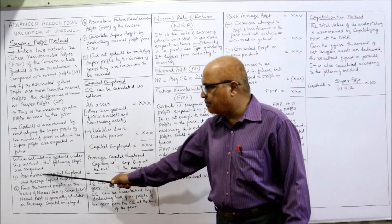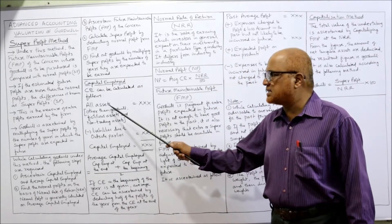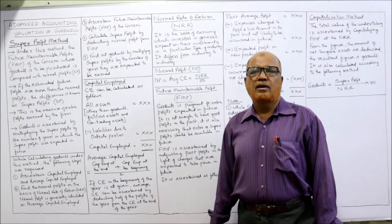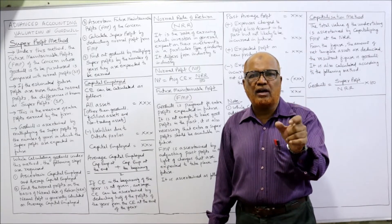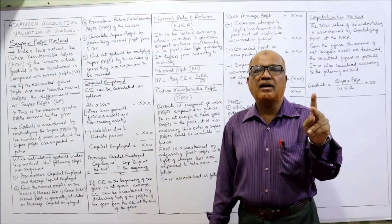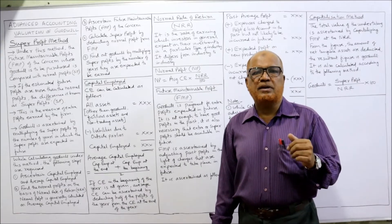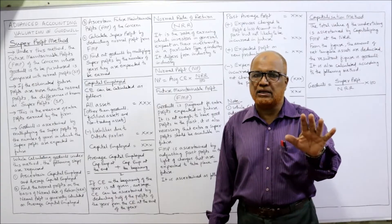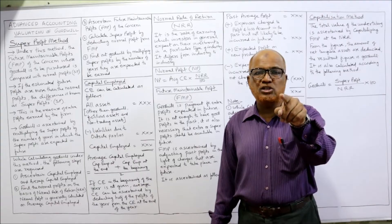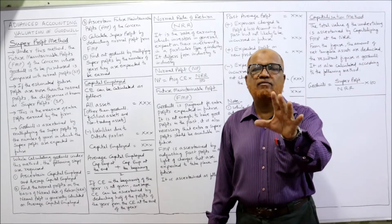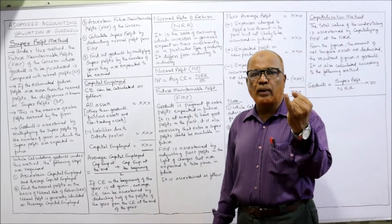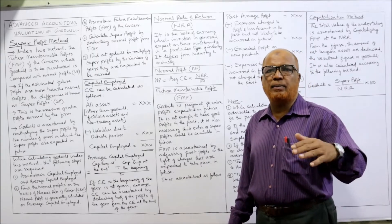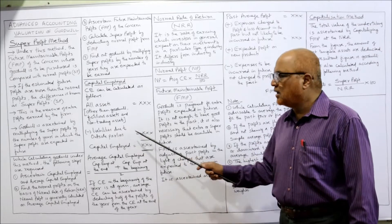Capital employed is calculated as follows. In assets, we take all assets other than goodwill, fictitious assets, and non-trading assets. Don't include goodwill. Don't include fictitious assets — fictitious assets mean imaginary assets like preliminary expenses, discount on issue of shares, discount on issue of debentures, or accumulated losses. Also exclude non-trading assets like government securities. Take all other assets, then minus liabilities due to outside parties such as sundry creditors, bills payable, bank overdraft, and outstanding expenses.